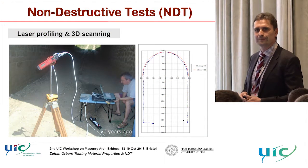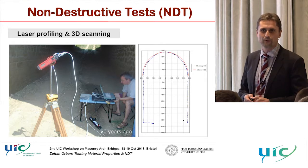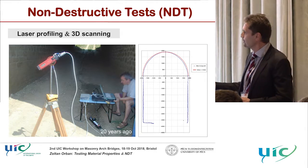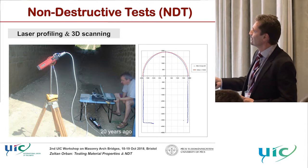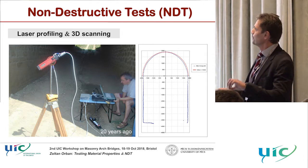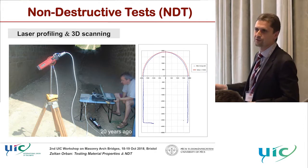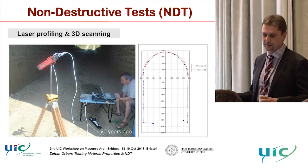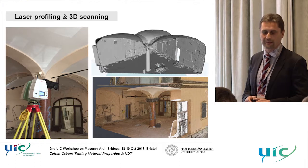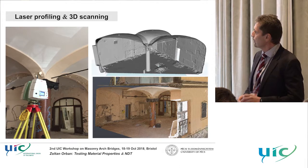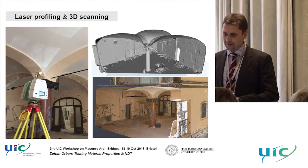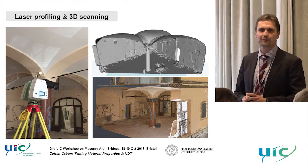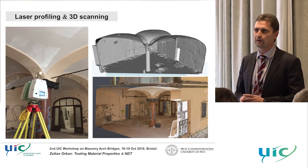Thermography gives only an overview of the distribution of wetness and doesn't provide accurate information, but it can be combined with point tests using simple resistivity testing. Geometry of arches is very important for structural behavior. We used a homemade device with a Hilti laser pointer attached to a computer to measure arch profiles with sufficient accuracy about 20 years ago. Today we can use 3D scanning and laser profiling, which is quite useful for analyzing arches, though photogrammetry can provide even more if done properly.